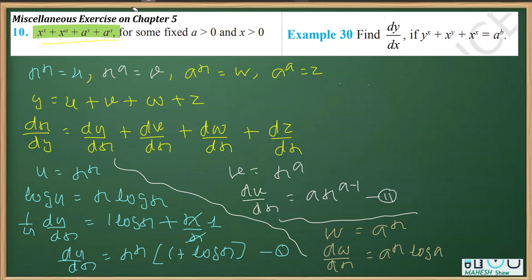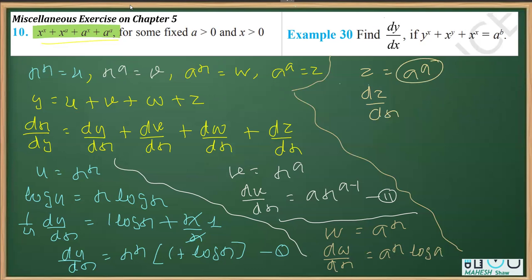Finally, z = a raised to the power a. You should know that a and a are arbitrary constants — just like 7^7 or 3^3, this is a constant, and the differentiation of a constant is 0. So dz/dx = 0.